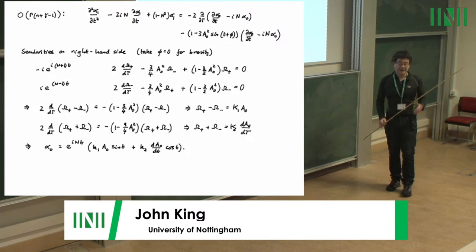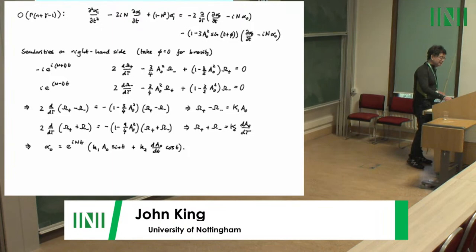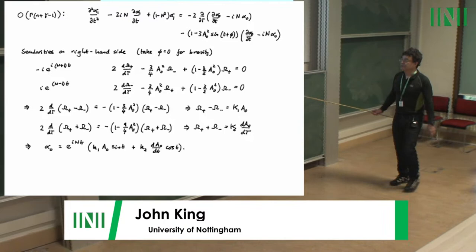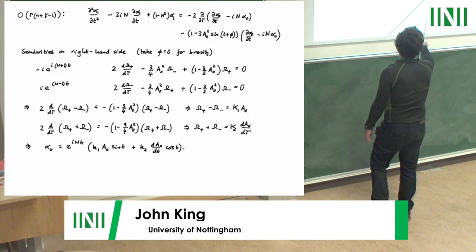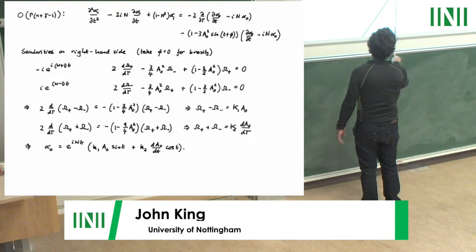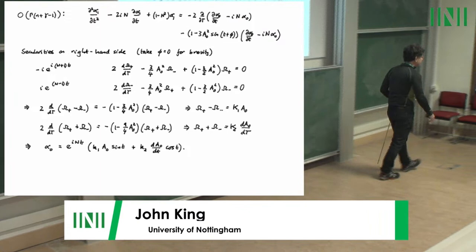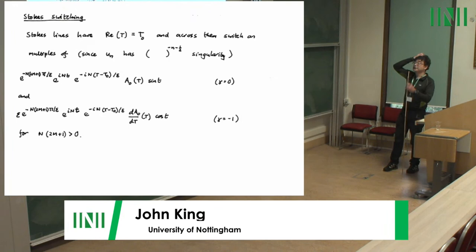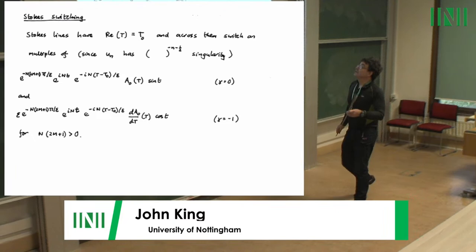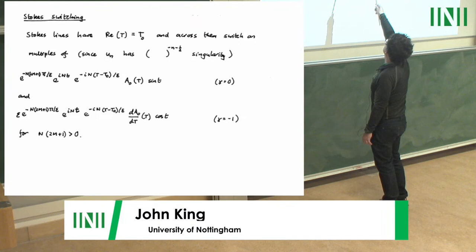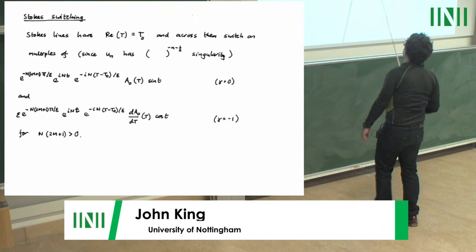There are secular terms again — of a slightly different type — things in the complementary function that resonate with the right-hand side, which you need to kill. Doing the algebra, using the multiple angle formula and so on, you get two conditions for your omegas. Combining these, taking plus and minus, you decouple the equations for the various combinations of omegas. There's a misprint: that should be big T. Having done that, alpha-naught is completely fixed up to arbitrary constants k-1 and k-2 that you'd have to get numerically.